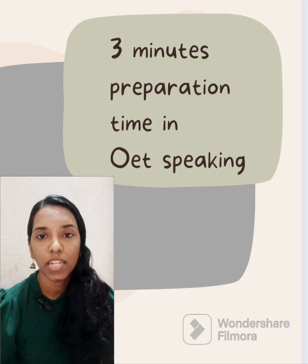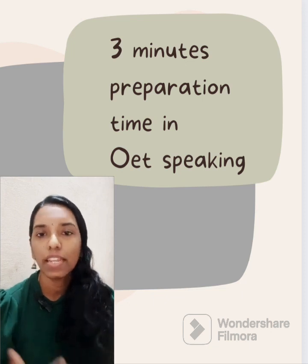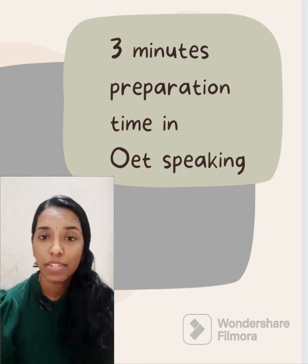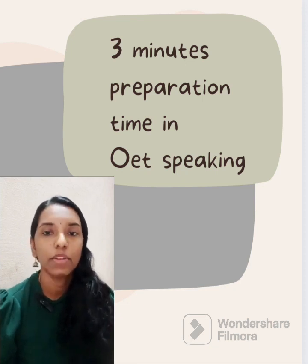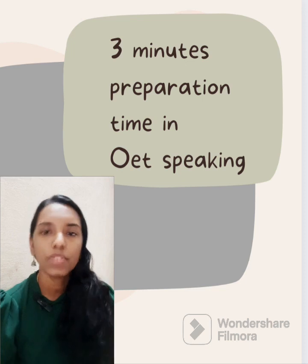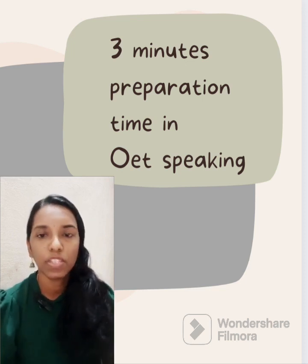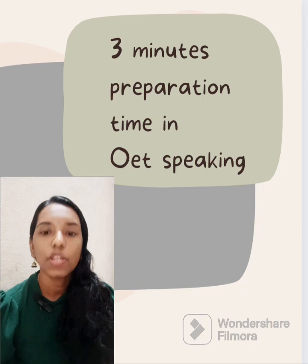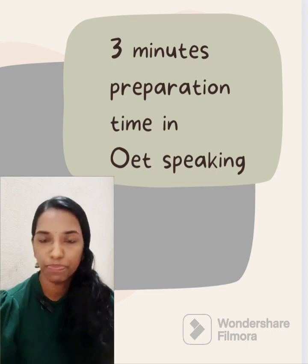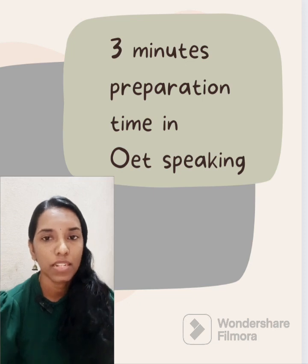You have to know every phrase they are using in the OET speaking cards. It is easier if you are familiar with all the terms like 'find out', 'explain', 'explore', 'confirm', and 'establish the consent of the patient to continue with the procedure', 'reassure and confirm' - so many phrases are there. If you go through many cards you will be familiarized with these phrases. But don't underline only these action phrases - you have to underline what is the content, what you have to explain, what you have to find out, what you have to reassure, and what you have to ask the patient.